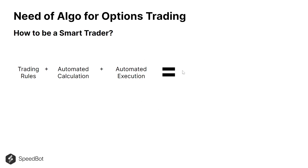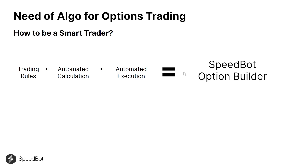Combining all three — trading rules, automated calculation, and automated execution — you get them all with the Speedbot option builder. This is where we'll be creating all our strategies in a no-code way. In the later part of this course, we'll cover in detail how to create strategies for different market conditions and build a more efficient portfolio that performs well even when things go against your positions. Thanks for watching.